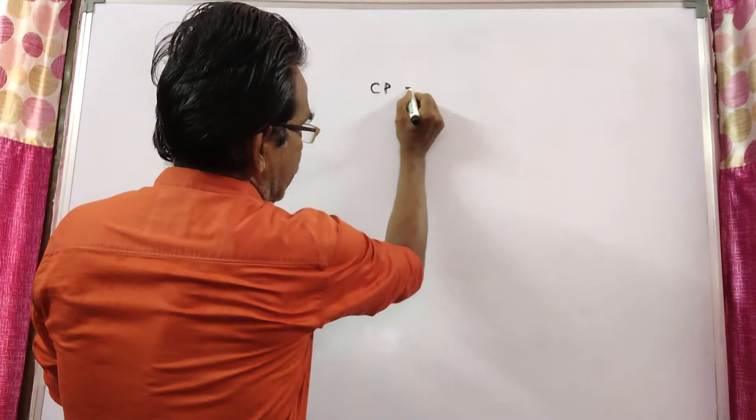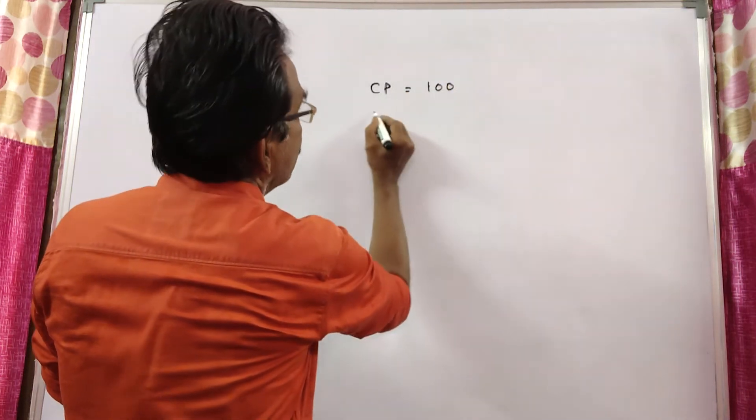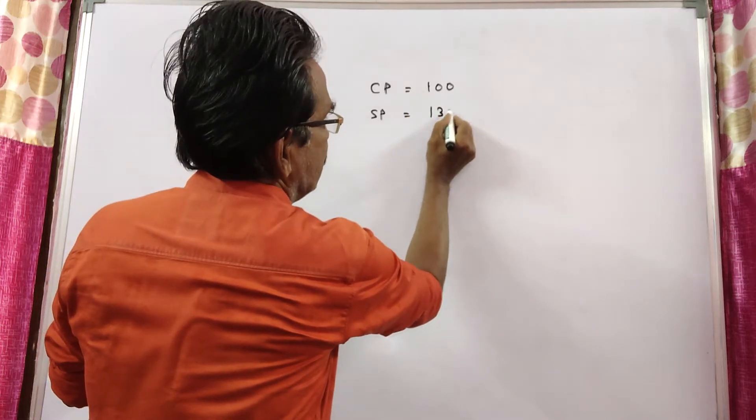That means, if cost price is equal to 100, then sold price will be 133 rupees.